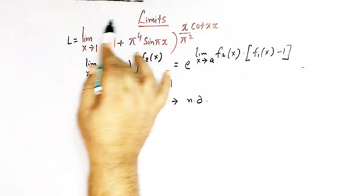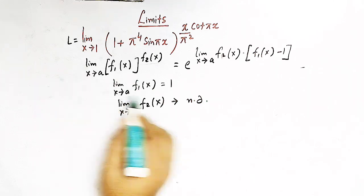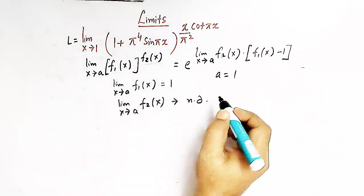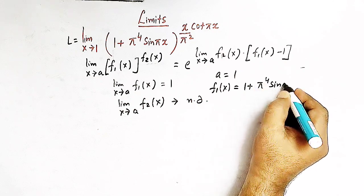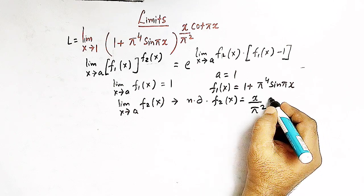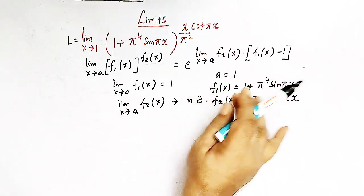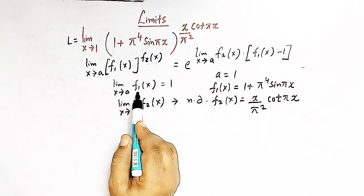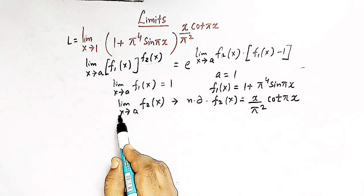Our limit is of this form. Comparing, we find A equals 1, f1(x) is given by 1 + π⁴·sin(πx), and f2(x) is given by x over π² times cot(πx). This limit can be directly evaluated using this result when the limit of f1(x) as x tends to A is 1, and the limit of f2(x) as x tends to A is not defined.